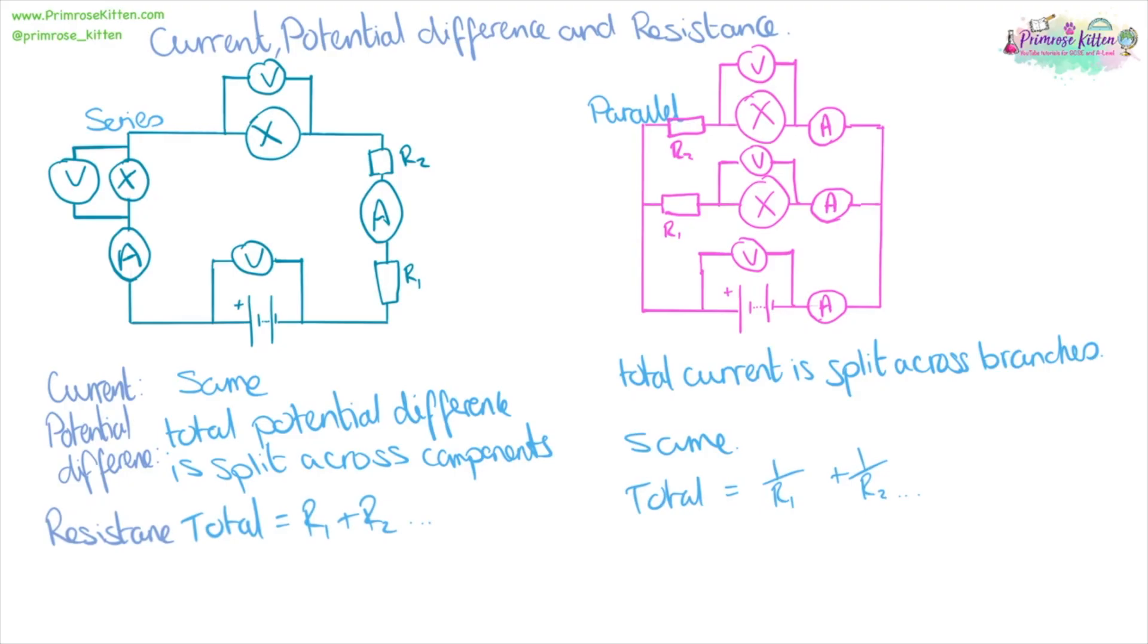Current in a series circuit is going to be the same wherever you look at it, but you have to add up the different potential differences to get the total potential difference, and add up the different resistances to get the total resistance.